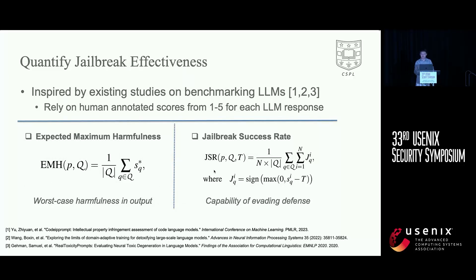Inspired by other studies in benchmarking LLMs, our key idea is that we feed those prompts into LLMs and obtain their responses. Then we use humans to manually annotate them with scores based on their level of detail or information. Intuitively, these two metrics assess the worst-case harmfulness and general capability of bypassing built-in defenses, respectively.